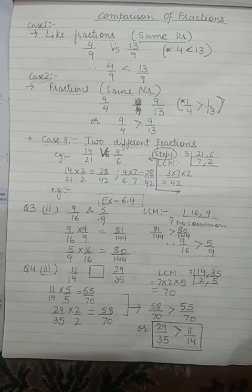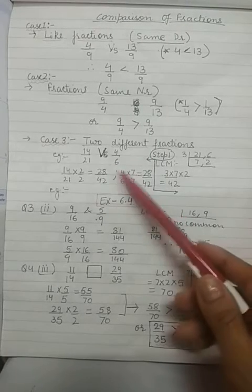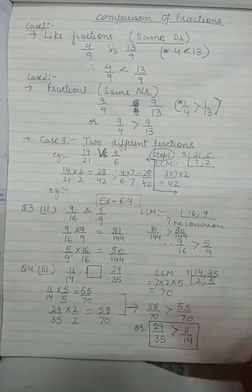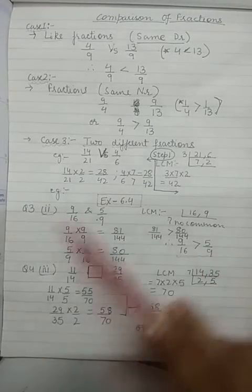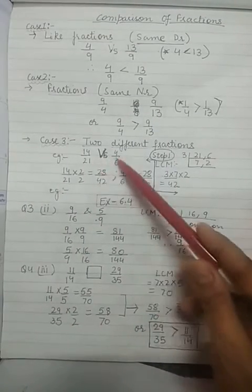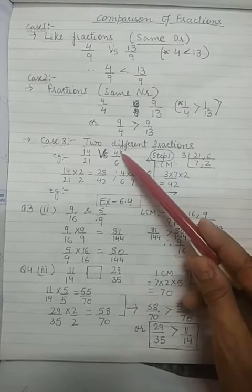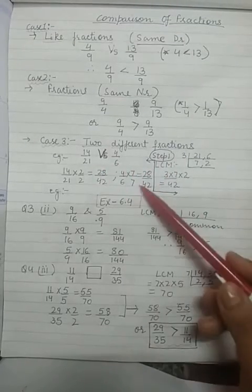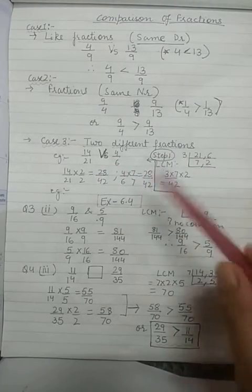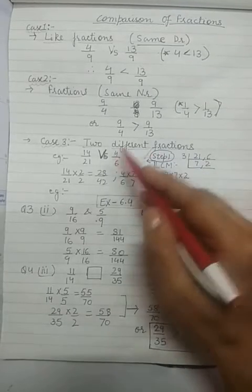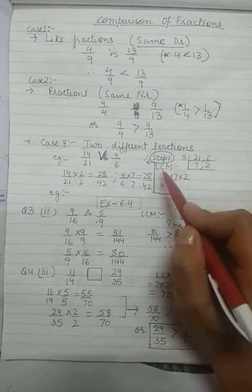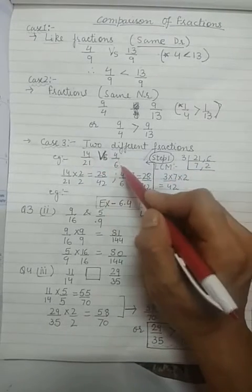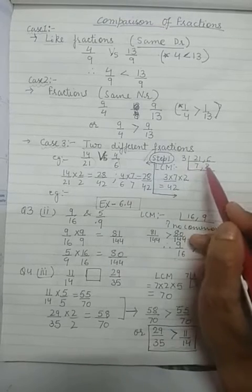Coming to Case 3. In Case 3, we have two different fractions — one is 14 by 21 and another is 4 by 6. Here neither the numerator nor the denominator are the same. So this is Case 3. How do we judge which is greater or smaller? The first step: take the LCM of the denominators.